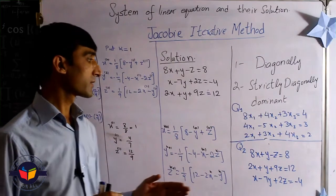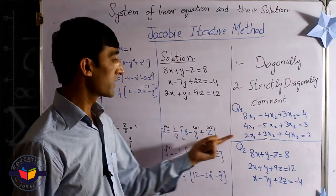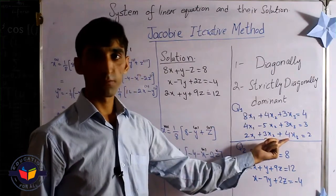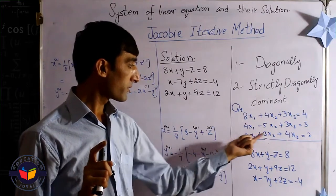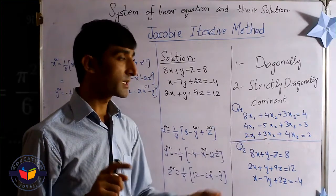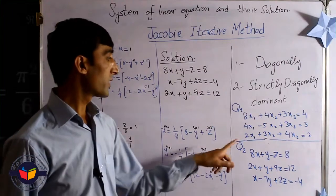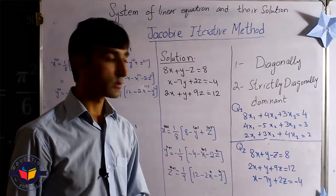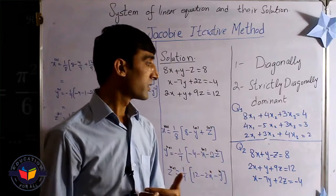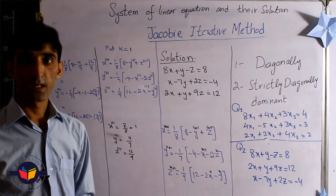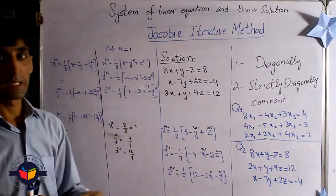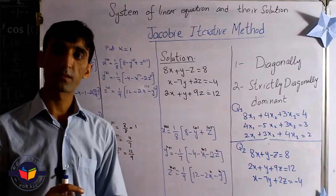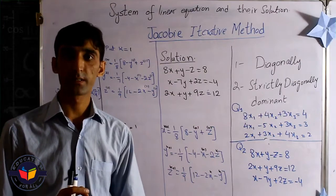In some cases, here you can see in the third one, this is 4, and the sum of these two is 2 plus 3 which is 5, and 5 is greater than 4. So the third one is also not diagonally dominant. In that case we cannot use the Jacobi Iterative Method. This is the limitation for the Jacobi Iterative Method.